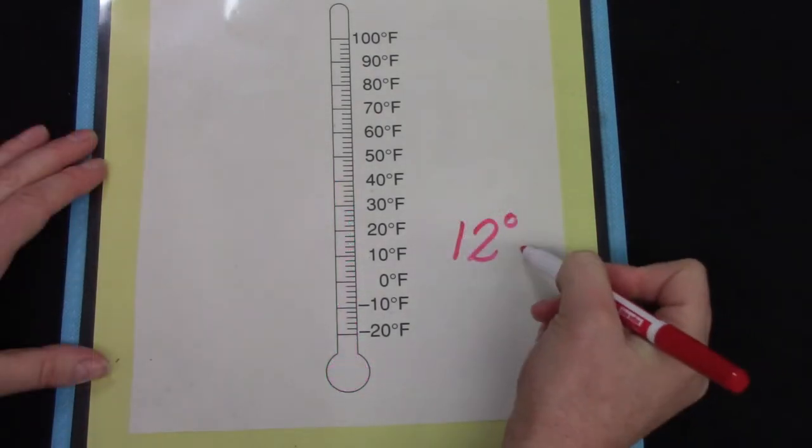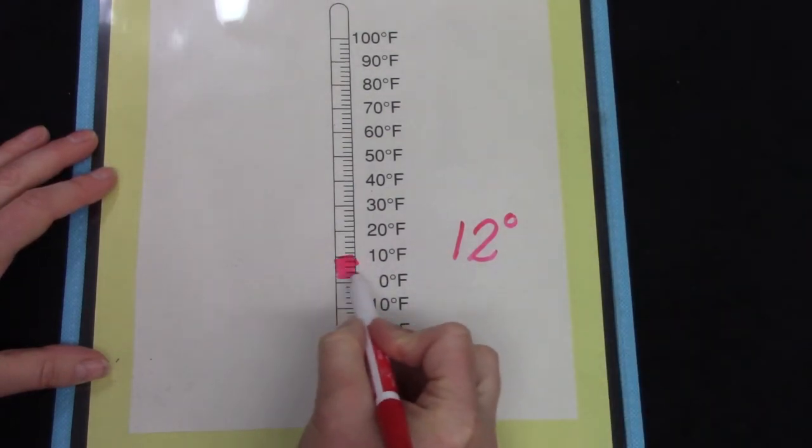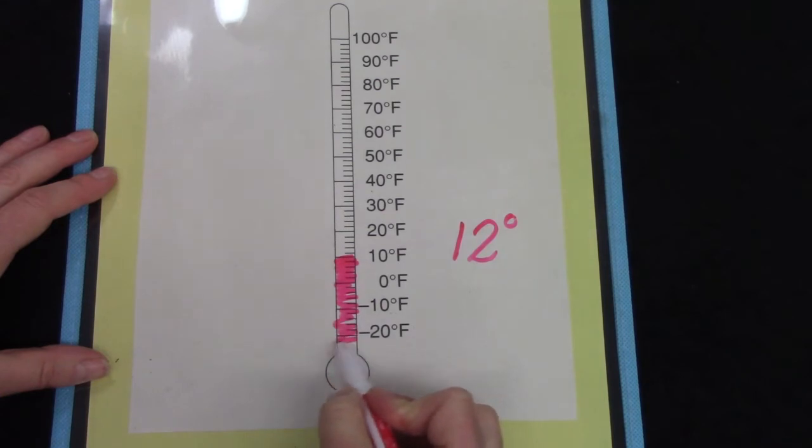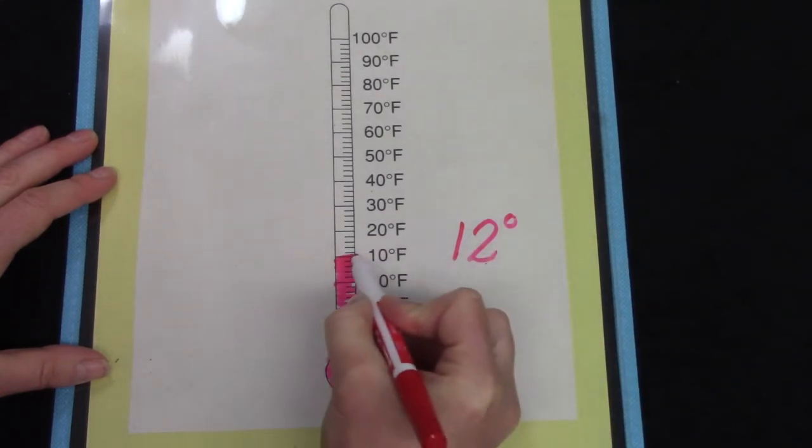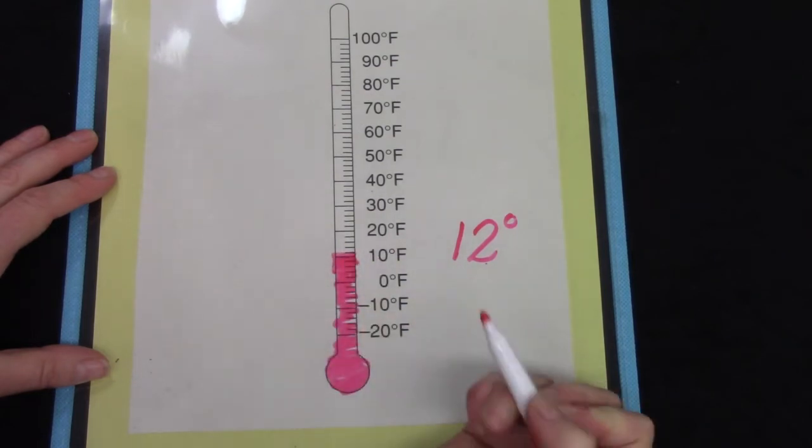Now we're going to find one that's a little bit colder. 12 degrees. Well, I'm going to go to 10. That's pretty easy to find. And if we're going to go to 12, it is just one more line above 10 because each line is worth 2 degrees.